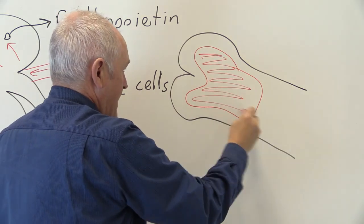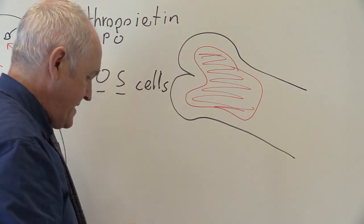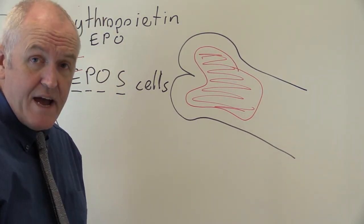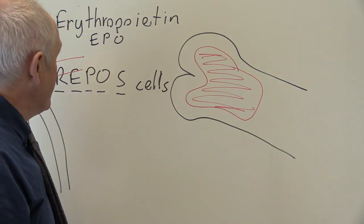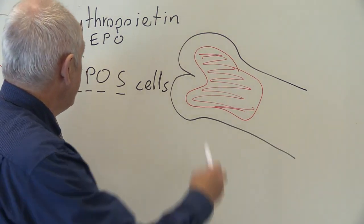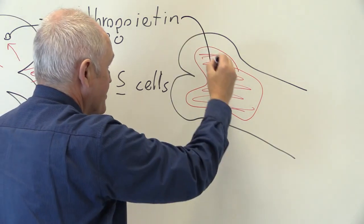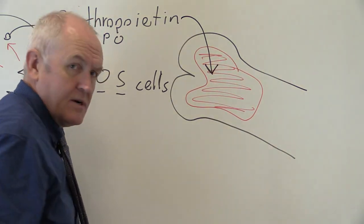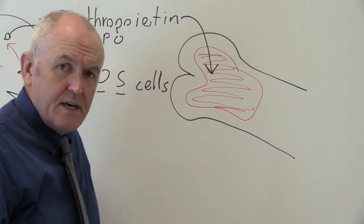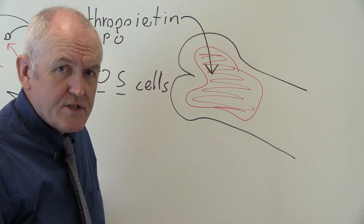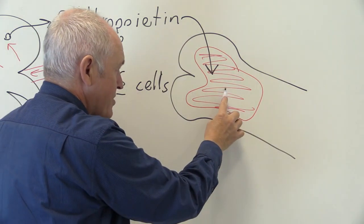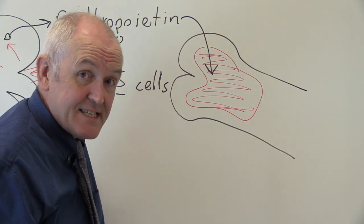And the red bone marrow contains stem cells that are responsible for the production of the red blood cells, the erythrocytes. And the erythropoietin circulates to the red bone marrow, and there it stimulates the stem cells to divide to produce more erythrocytes. So the erythropoietin is stimulating the process of erythropoiesis.